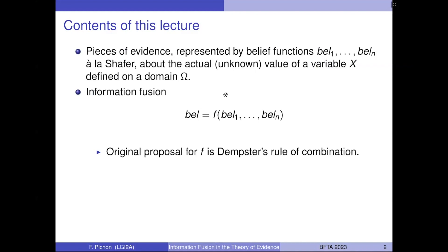The original proposal by Shafer on this function F is Dempster's rule of combination. This rule has had a lot of success and is still arguably the most often encountered rule in theoretical developments and in applications. However, its applicability is tied to some particular requirements. Since this proposal, alternative combination rules have appeared to handle a variety of situations, leading to what Philip Smets called a jungle of combination rules.